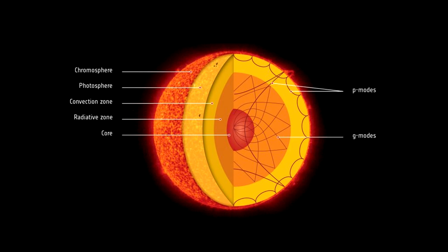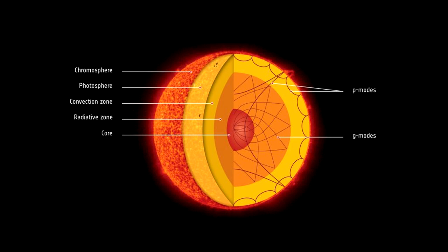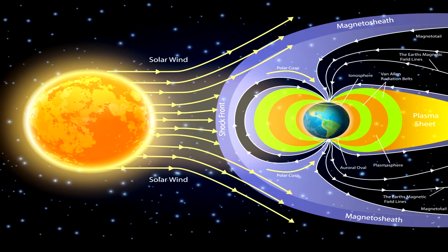Above the photosphere lies the chromosphere and the corona. The corona, surprisingly, is hotter than the layers below it, with temperatures reaching up to 1 million degrees Celsius. It's also the source of the solar wind, a stream of charged particles that flows out into space.